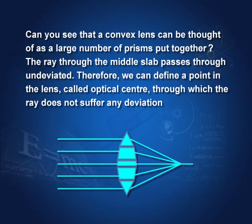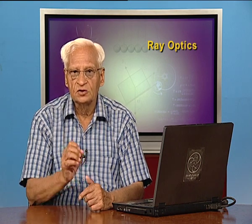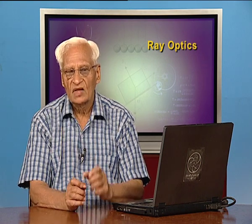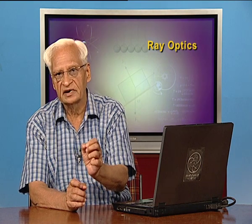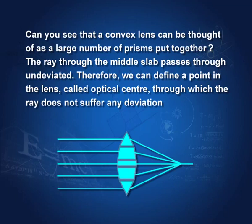In the middle of the lens there is a point through which a ray can pass undeviated. This point is called the optical center of the lens. Please be careful: the optical center is not necessarily the geometric center of the lens. It is any point in the lens through which a ray can pass undeviated.